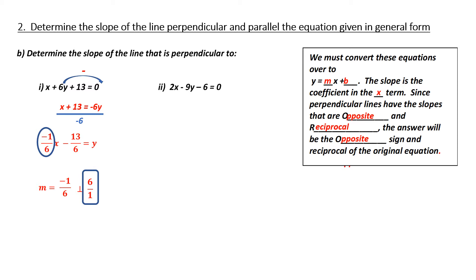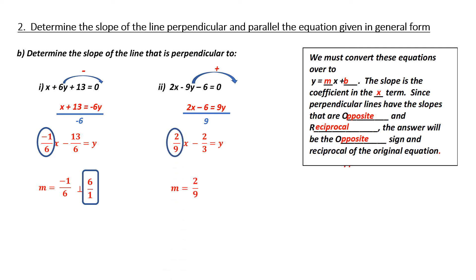Stop the tape now and try the second one by yourself, and we'll do it together in a second. We're back. I need to isolate for y to find my original slope. So, to get rid of negative 9y on the left-hand side, I'm going to add 9y to both sides. I now need to get rid of 9 and isolate for y, so I'm going to divide both sides by 9, which gives me 2 over 9x minus 2 over 3 equals y. My original slope is 2 over 9. The perpendicular slope would be the opposite, which is negative, and reciprocal, which would be 9 over 2. So, my answer is negative 9 over 2. That would be my final answer.